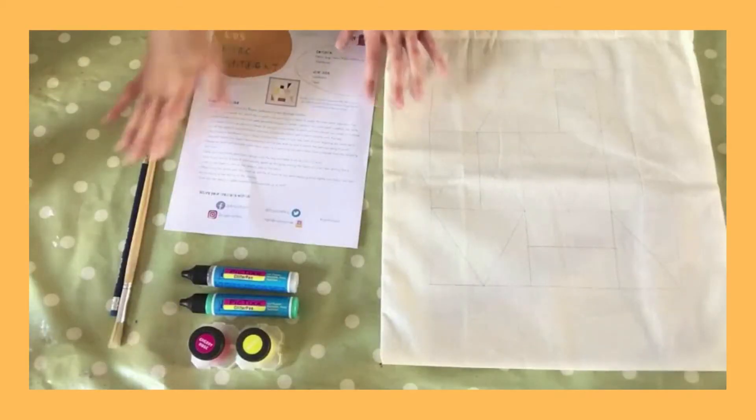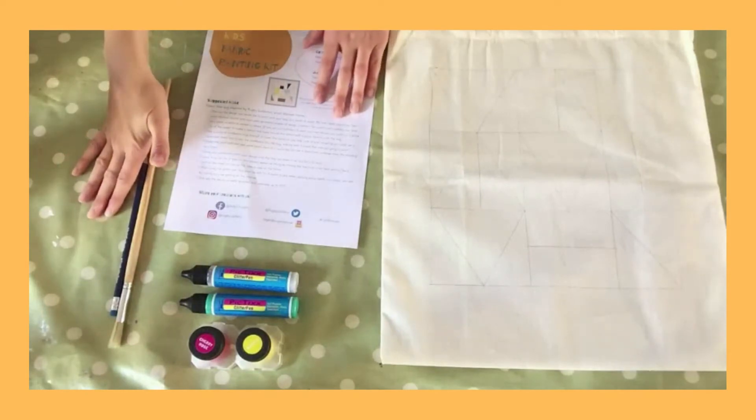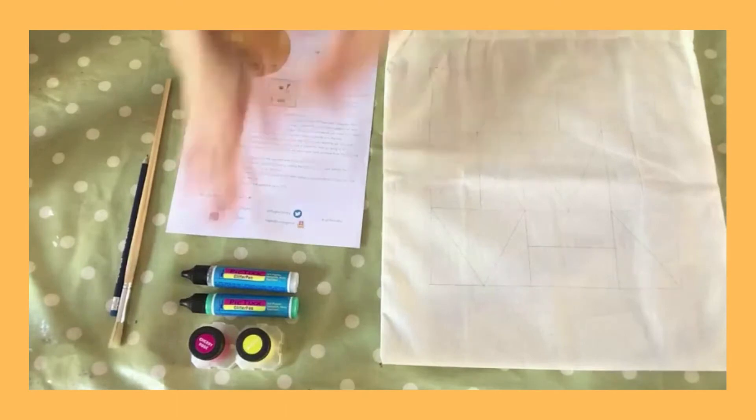So the first thing you want to do is make sure the surface that you're working on is covered and protected and also wear an apron to cover your clothes as well as we will be using fabric paints.